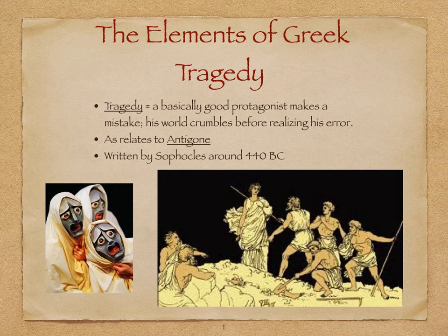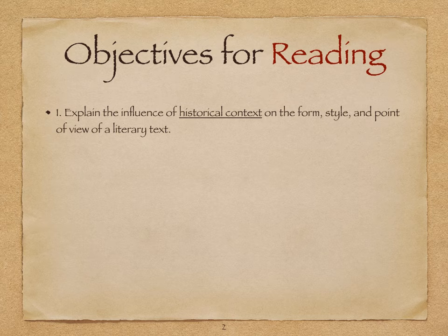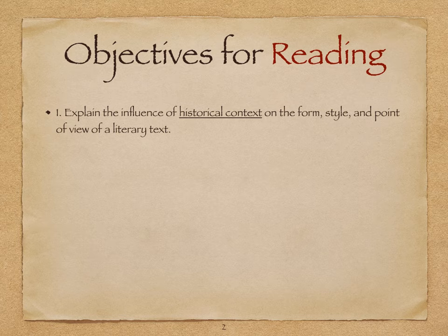Let's talk about some objectives for your reading. The first thing you want to be able to do when reading Antigone is to explain the influence of historical context on the form, style, and point of view of the text. This play was written a long time ago in ancient Greece, and the way people lived back then — their culture and their beliefs — highly influenced the way the play is written and its purpose.